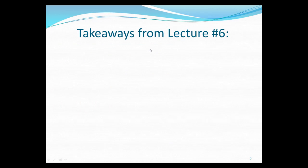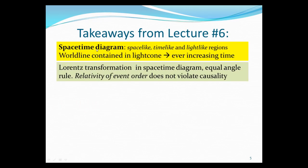Let's talk of some takeaway from this lecture number six. We first talked about space-time diagram. In particular, we talked about space-like, time-like, light-like regions. And it helps understand the causal effects in physics. In particular, a world line must be contained in a light cone. And so, therefore, it would be ever-increasing time. And Lorentz transformation in the space diagram means that the time and space axis must close in or fan out with equal angle. And also, relatively event order does not violate causality.